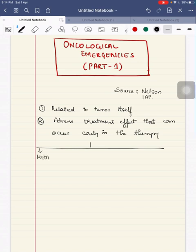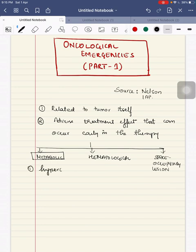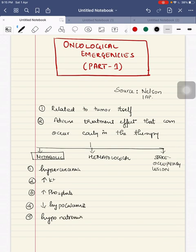Oncological Emergencies can be classified as three types: metabolic, hematological, and third space occupying lesions. Among metabolic, we have hyperuricemia, second hyperkalemia, third hyperphosphatemia, fourth hypocalcemia, and fifth hyponatremia.